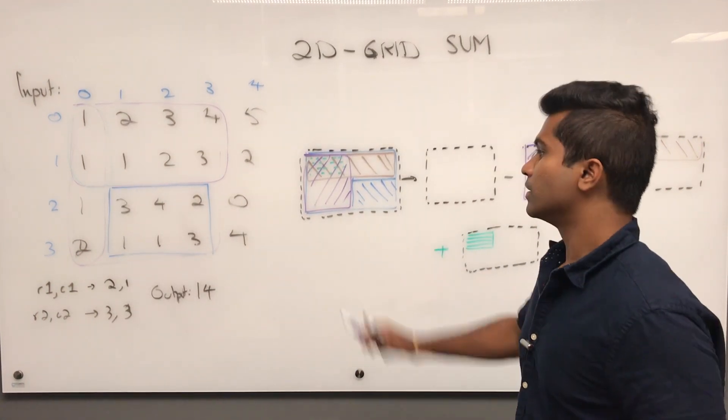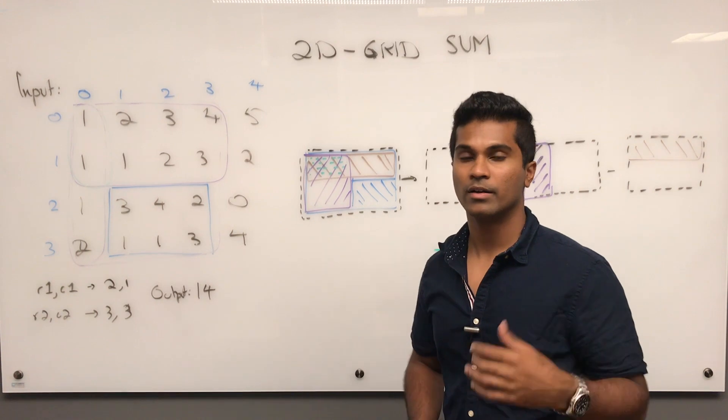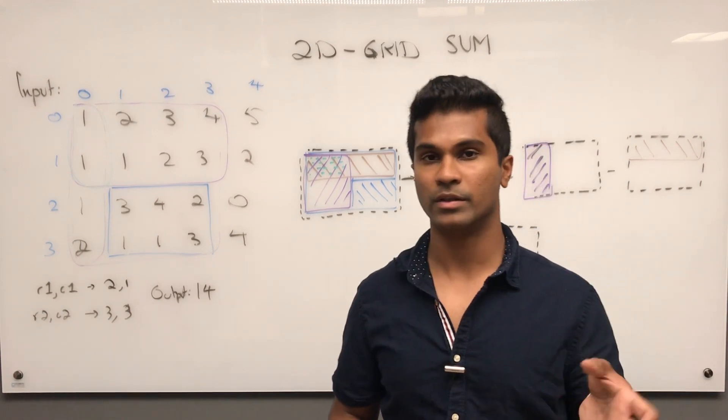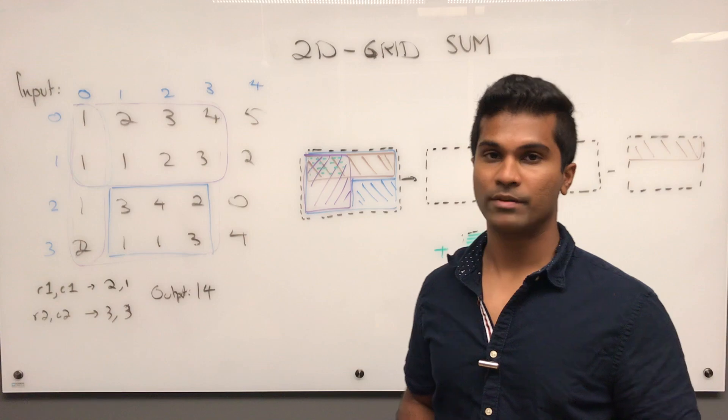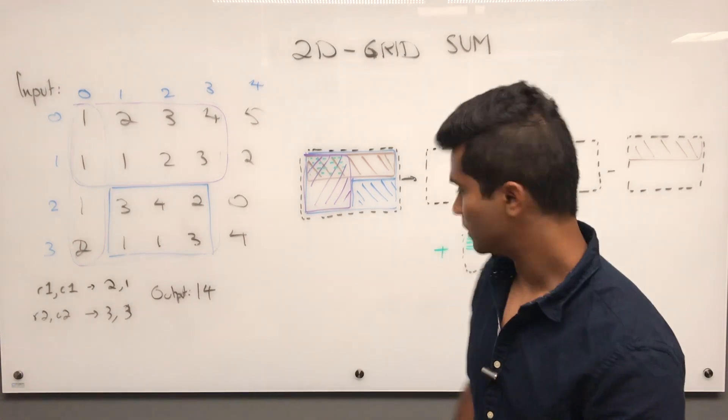So to do this, I'm going to make use of a DP 2D grid array and I'm going to populate that first and then we solve this.